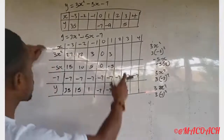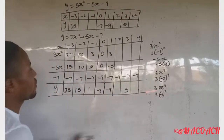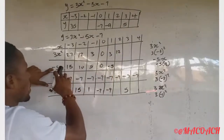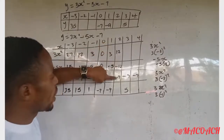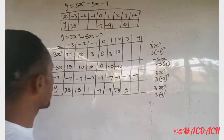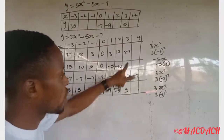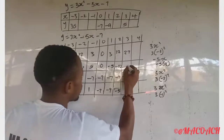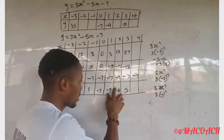When s equals two: three times two squared equals three times four, which is 12. Minus five times two gives minus ten. So 12 minus 10 minus 7 equals minus 5. Y equals minus five when s equals two. When s equals three: three times nine equals 27. Minus five times three gives minus fifteen. So 27 minus 15 minus 7 equals 5. Y equals five when s equals three.